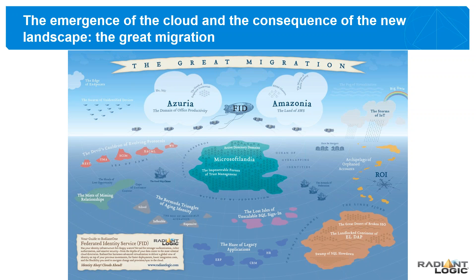On the left-hand side you can see the 'Devil's Cauldron of Evolving Protocols.' Applications have a hard time when you ask them to speak a different language or act differently — they like to go to one place to get information in one protocol. Radiant Logic provides the capability of taking one source of identity and representing it simultaneously in as many different protocols as needed for different requirements and different applications.